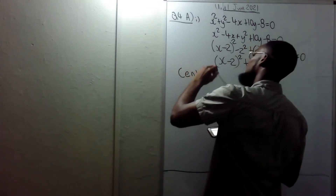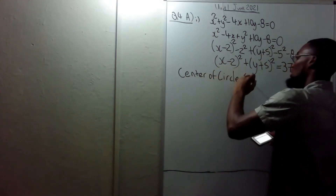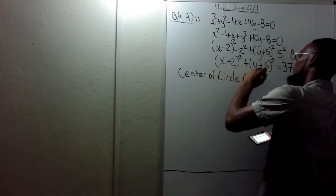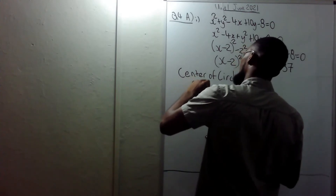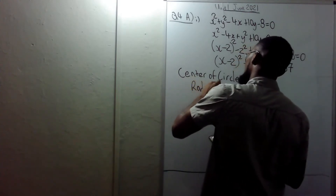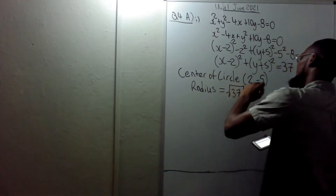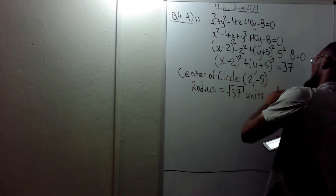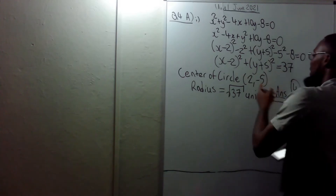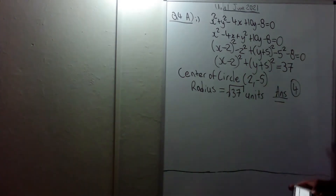So now we can tell them the center of the circle. The center of the circle is (2, −5) and the radius is equal to the square root of 37 units. Remember, radius is a length. So the center is (2, −5) and the radius is √37.